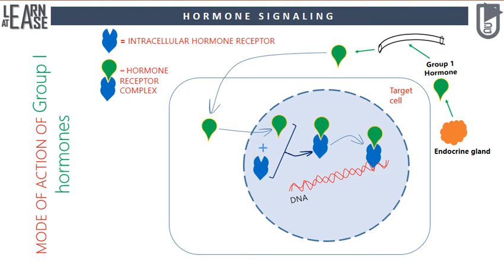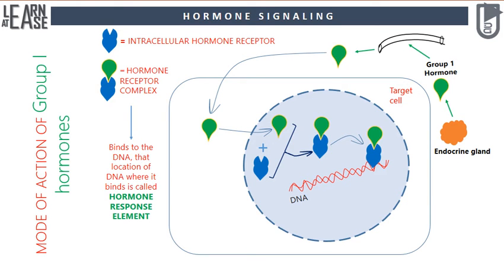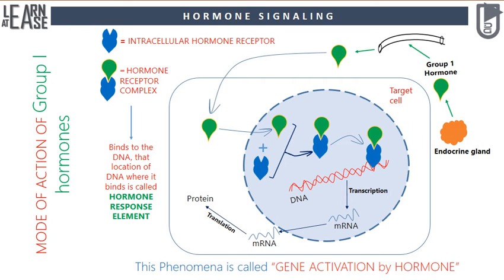Inside the nucleus the hormone binds to the receptor and forms the hormone-receptor complex. This complex binds to the DNA. The location on the DNA where the hormone-receptor complex binds is called the hormone response element, abbreviated as HRE. Once this complex binds to the DNA, it activates transcription of certain genes, producing mRNA. This mRNA is translated by ribosomes in the cytoplasm to form the desired protein, which ultimately induces the desired effect. This phenomenon is called gene activation by hormone.